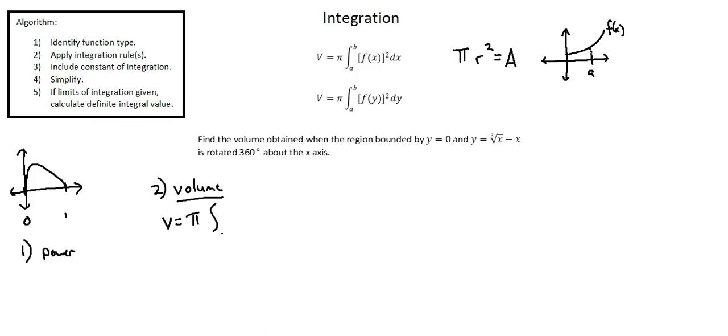And our limits of integration, a to b, are zero to one. We want to square our function. Our function is the cube root of x minus x. So, I'm going to write this as x to the power of one-third minus x squared with respect to x. When we complete this calculation, we'll have the volume of our 3D object.